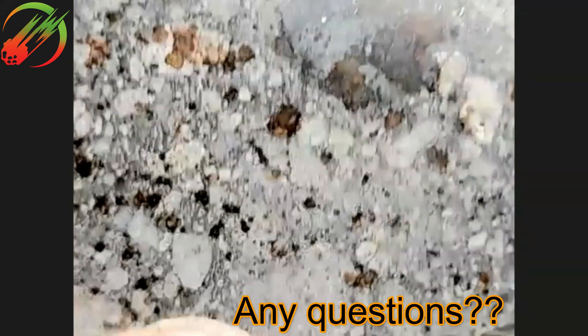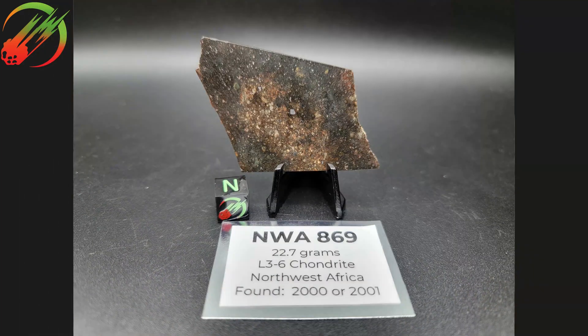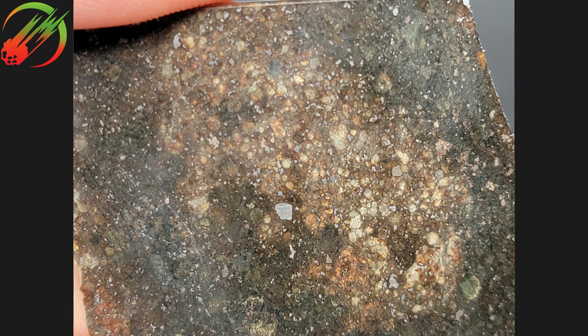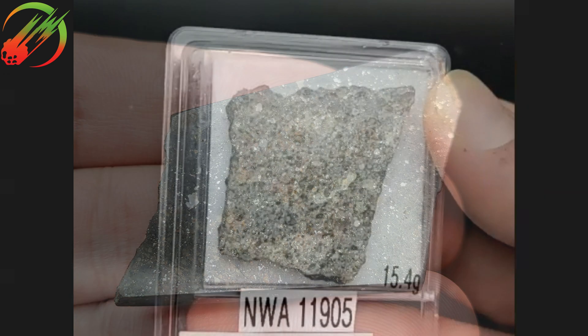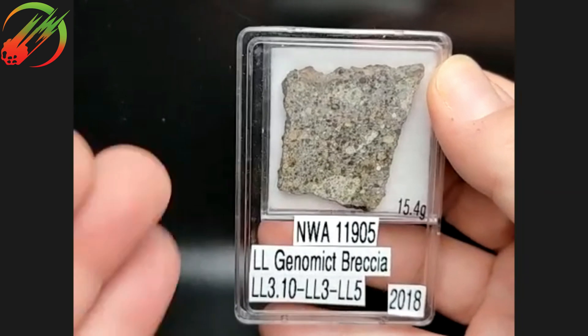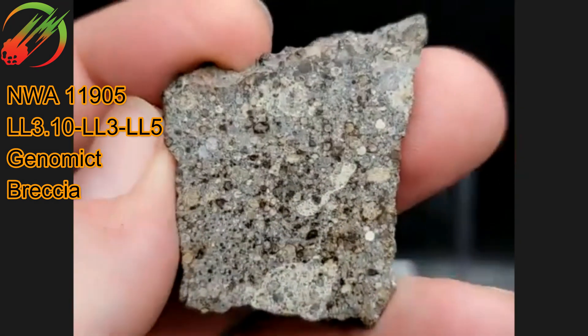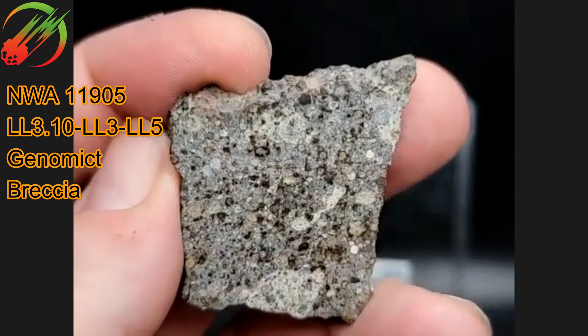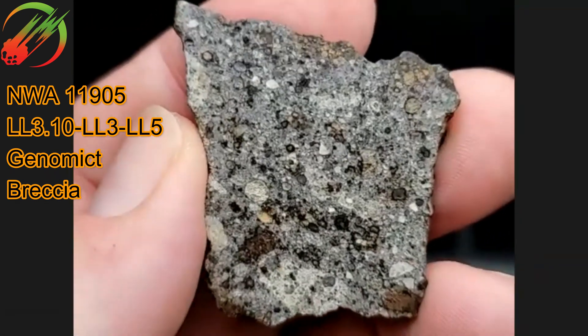I have a question — NWA 869, which most people are familiar with, is classified as L4 to 6, but I noticed the classification doesn't mention genomic. Would that be considered a genomic meteorite? Under this definition, yes, that probably would represent a genomic breccia. Early classifications weren't necessarily all succinct, and this meteorite actually has a lot of an NWA 869 sort of appearance to it.